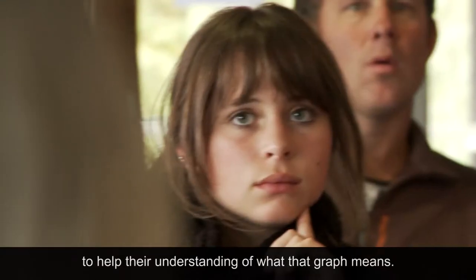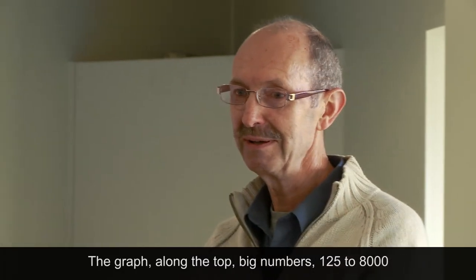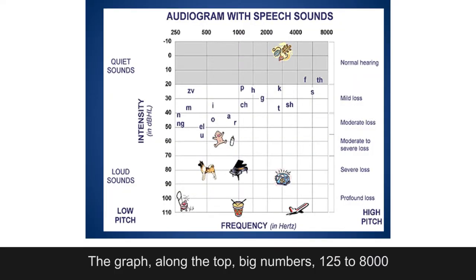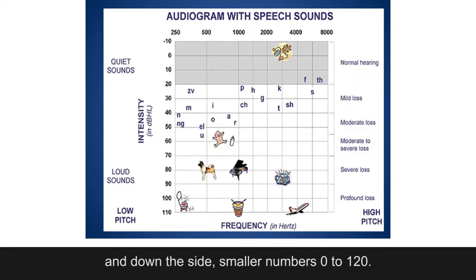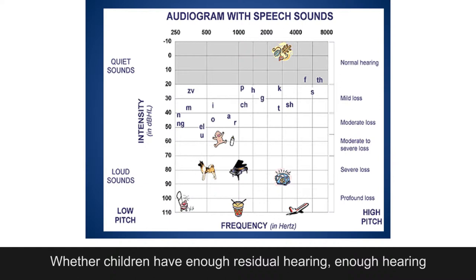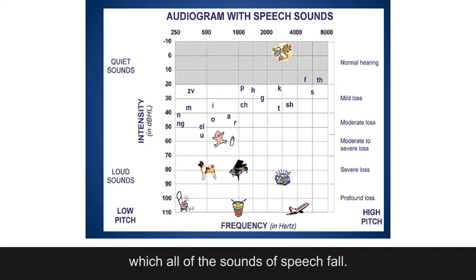I tried to help their understanding of what that graph means. The graph, along the top, has big numbers — 125 to 8,000 — and down the side, smaller numbers — 0 to 120 — indicating whether children have enough residual hearing, enough hearing sensitivity, over a wide range of frequencies within which all of the sounds of speech fall.